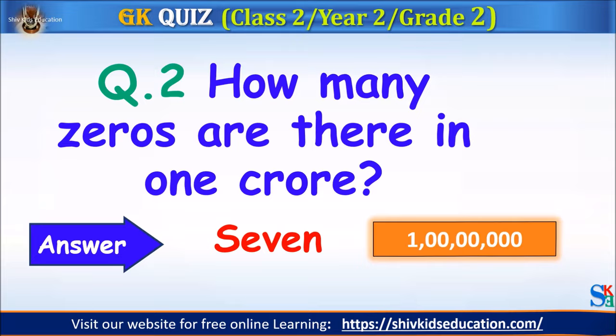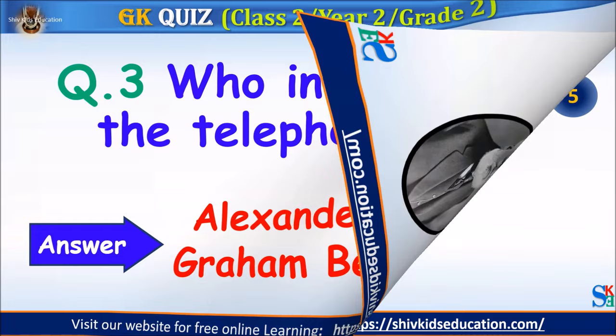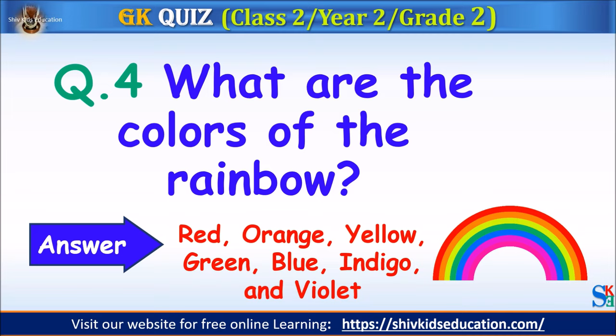Question 3: Who invented the telephone? Your time starts. The answer is Alexander Graham Bell. Question 4: What are the colors of the rainbow? Your time starts. The answer is red, orange, yellow, green, blue, indigo and violet.